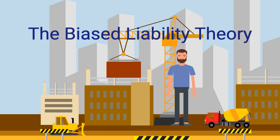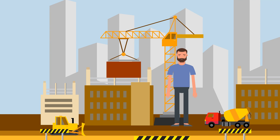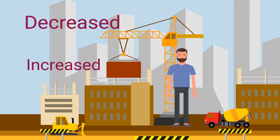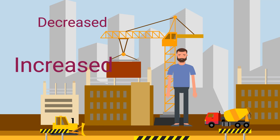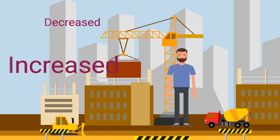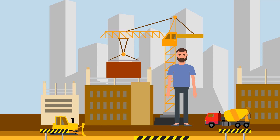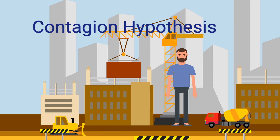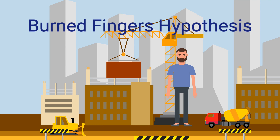The Biased Liability Theory considers that once a person sustains an accident, the probability that the same person will sustain a further accident in the future has either decreased or increased when compared with the rest of the population at risk. If the probability has increased, the phenomenon is referred to as the Contagion Hypothesis. If the probability has decreased on the other hand, it is commonly called the Burned Fingers Hypothesis.